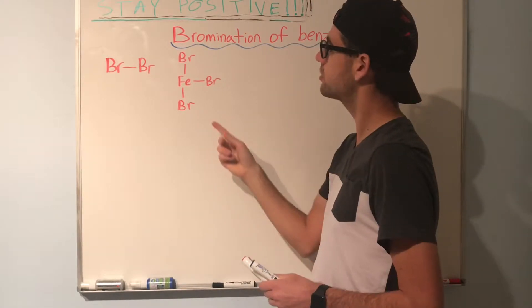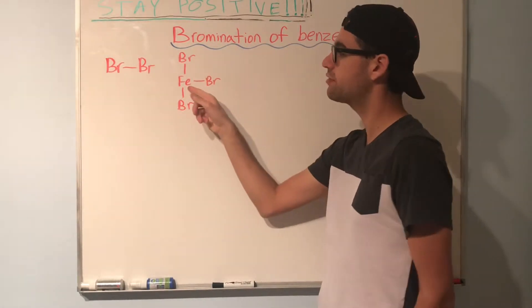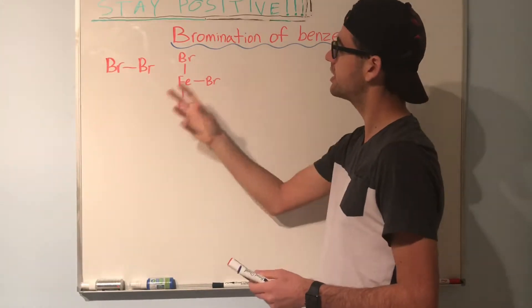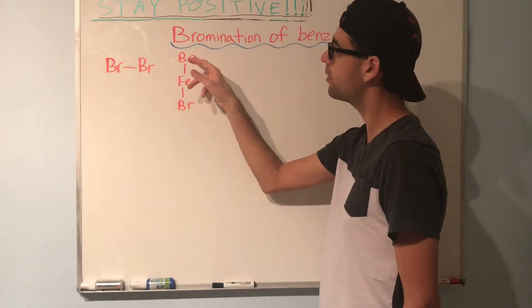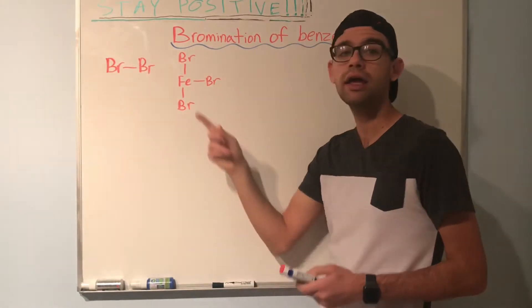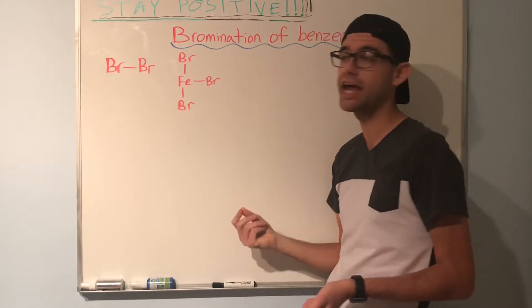One thing to note is that these bromines are much more electronegative than this iron is. That means the electron density will be pulled towards the bromine atoms, giving the iron a delta positive charge.